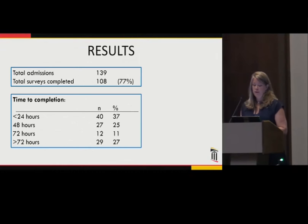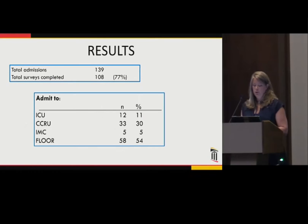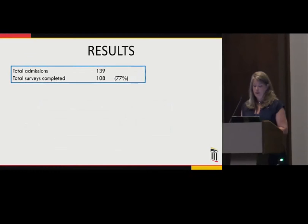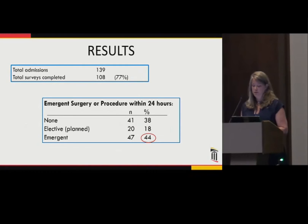This prospective observational study was performed on a dedicated EGS service. A tertiary survey document template was created to be completed by service-based APPs within 72 hours of admission. The process included: physical exam with attention to pre-existing wounds and indwelling catheters; thorough medication reconciliation; notation of whether high-alert medications were missed or incorrect in the EMR; review of all diagnostics and final radiology interpretations; and whether the patient underwent an emergent procedure within 24 hours of admission. There were 139 EGS admissions during the study period, of which 108 had a completed tertiary survey performed. The majority — 62% — were performed within 48 hours of admission.